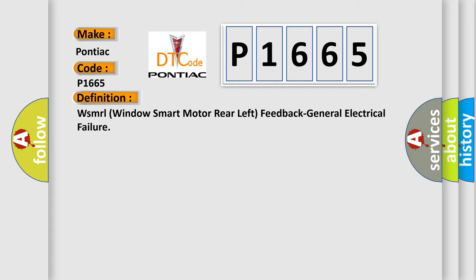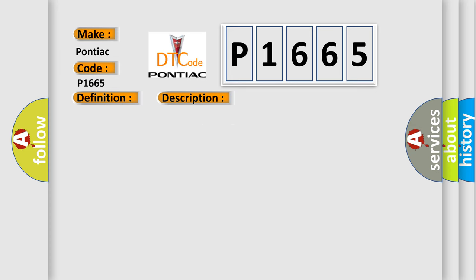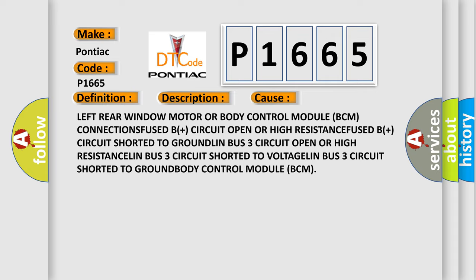The power window motors are equipped with a bi-directional motor that uses integrated electronics to communicate with the Body Control Module (BCM) through the LIN bus data network when a window switch is operated. The requested power window motor operates in the direction requested and communicates this data to the BCM through the LIN bus 3 circuit. This diagnostic error occurs most often in these cases: left rear window motor or BCM connection faults, fused B+ circuit open or high resistance, fused B+ circuit shorted to ground, or LIN bus 3 circuit open or high resistance.